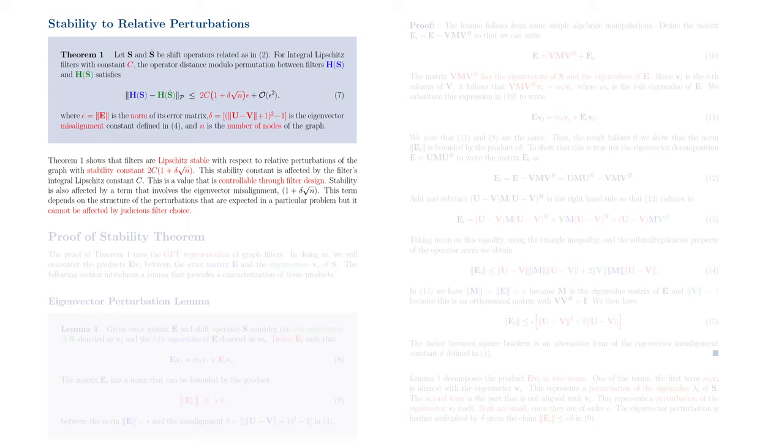Theorem 1 shows that filters are Lipschitz stable with respect to relative perturbations of the graph, with the stability constant 2C times 1 plus delta square root of n. This stability constant is affected by the filter's integral Lipschitz constant C. This is a value that is controllable through filter design.